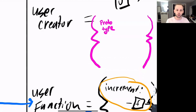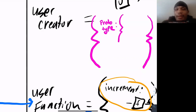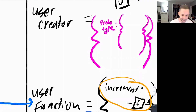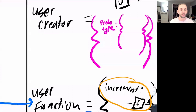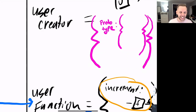ECMAScript engineers looked at the prototype object on user creator's object form and thought: this object looks like a good place to store some stuff. It's like free storage — not being utilized at all. So what they decided was: we're going to set the dunder proto — not to user function store, because we never wrote that line of code — but we're going to automatically, when using the new keyword, set the dunder proto to the prototype object on the object form of the function that we're currently executing.